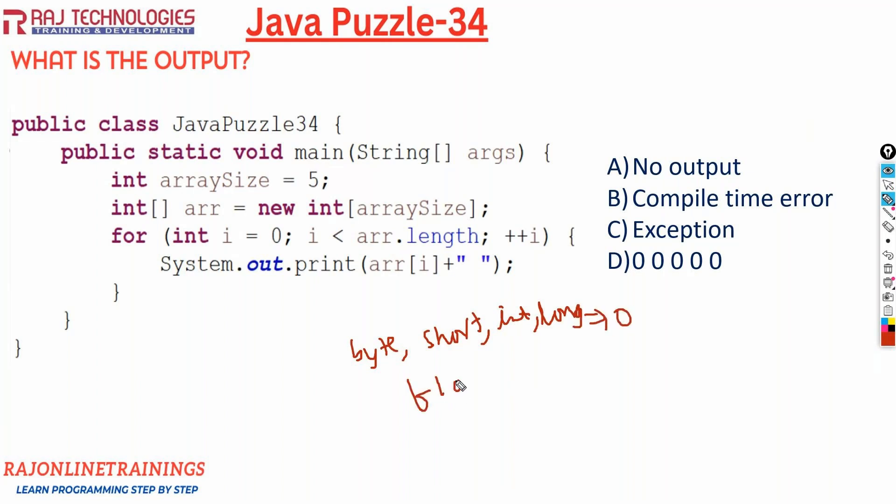For float and double, for float and double floating type, the default value is zero point zero. And for boolean, for boolean data type, the default value is false. And for any reference type, if you go with any reference type like string or classes, it will go with null.